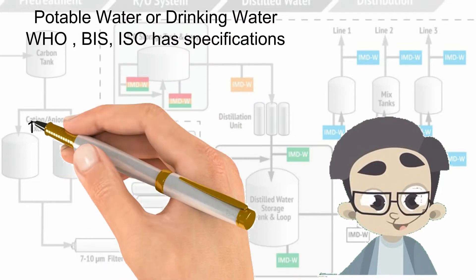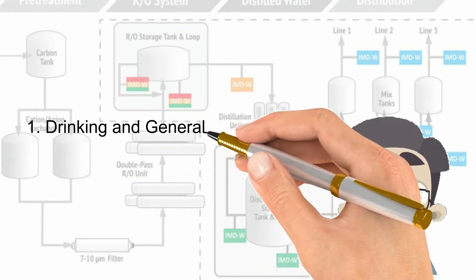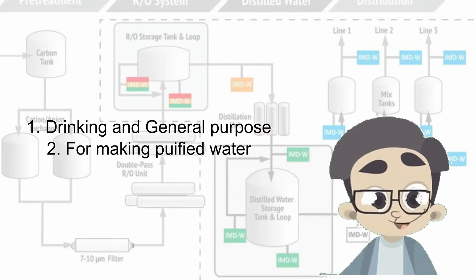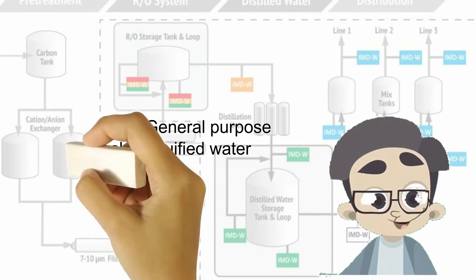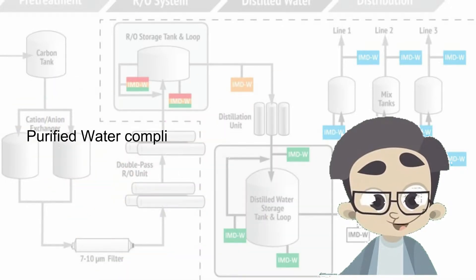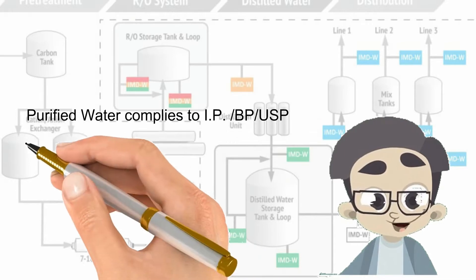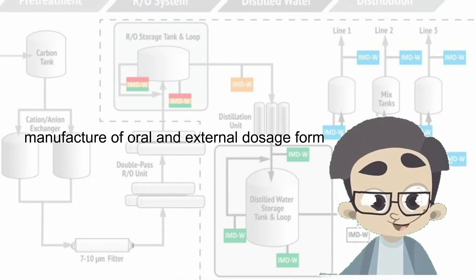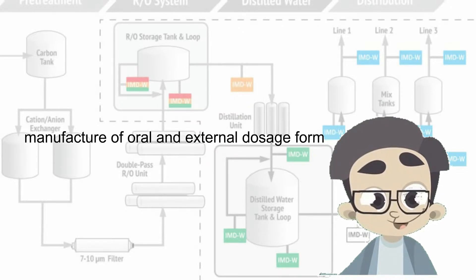Purified water is pharmaceutical grade water. The specifications of purified water are mentioned in BP, USP, European Pharmacopoeia, IP, and other pharmacopoeias of different countries. Purified water is used in the manufacturing of oral solid dosage forms like tablets and oral liquids. It is also used in the manufacturing of external preparations like ointments and lotions.